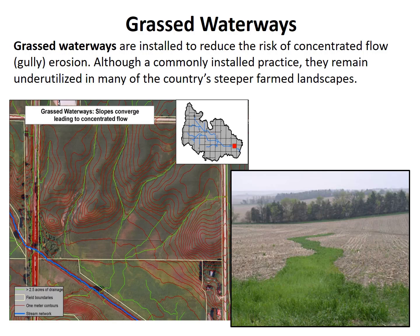Let's take a look at a few examples. In each example, you'll see a photograph of what the practice looks like on the ground and a map of what the results look like as they come out of the ACPF program. The first example is the grass waterway. On sloping cropland, concentrated water flows can often occur, and in these areas this can lead to the formation of gullies. Grass waterways are planted along these flow paths to keep the soil in place and prevent gullying from occurring.